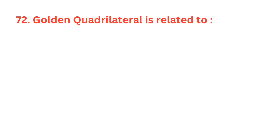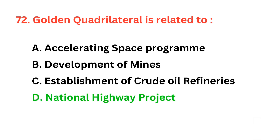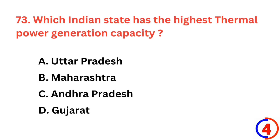Golden Quadrilateral is related to? The correct answer is option D, National Highway Project. Which Indian state has the highest thermal power generation capacity? The correct answer is option B, Maharashtra.